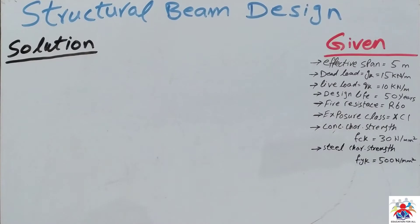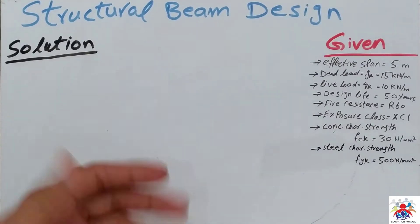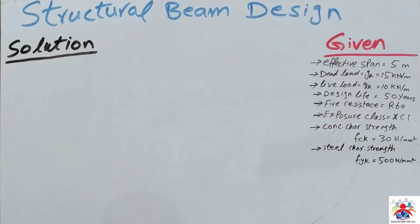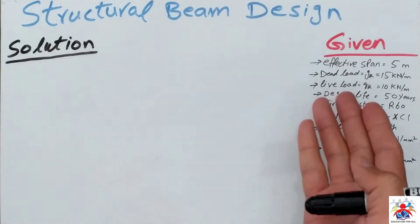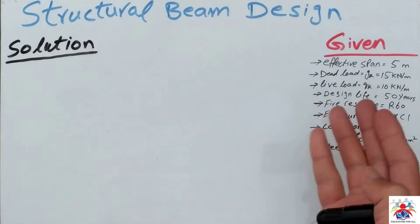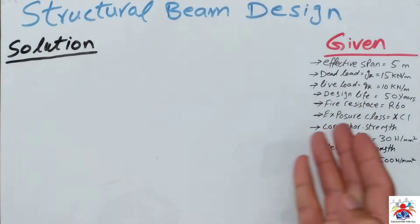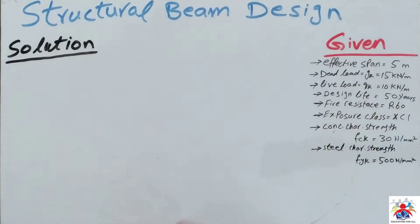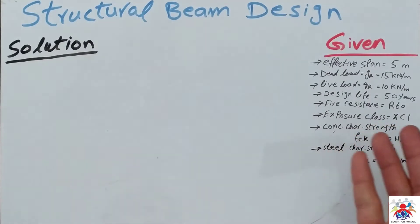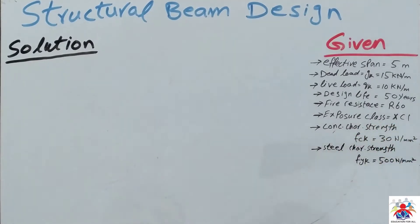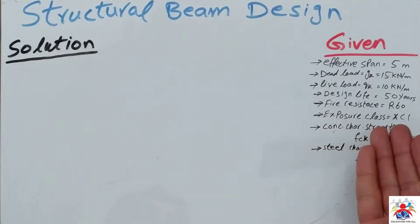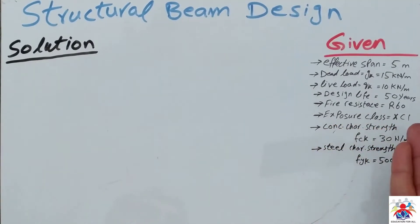Hello and welcome to my YouTube channel. In this video I am going to explain how to design a beam. We have some given data: effective span is 5 meters which is 5000 millimeters, dead load Gk is 15 kilonewtons, live load Qk is 10 kilonewtons, and design life is 50 years.